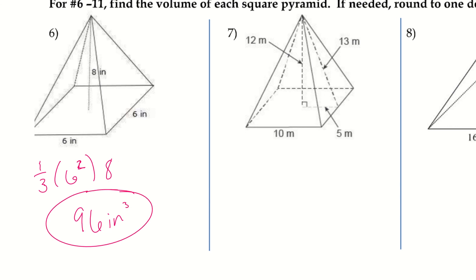All right, let's go ahead and try the next one. So, I have one-third times the area of the base, so this is ten, so I'm going to put ten squared, and then times the height, which is twelve.